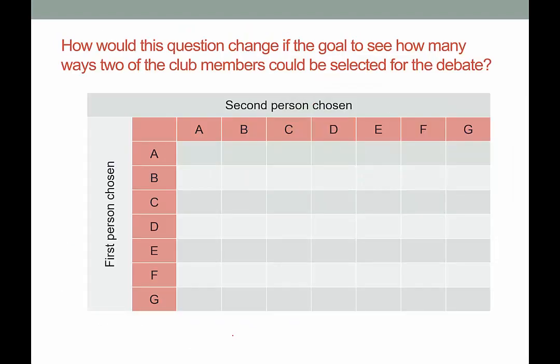How would this question change if the goal was to see how many ways two club members could be selected for the debate where there are no roles — you're either selected or you're not? In this case, one person still can't be both people, so we're not going to include Anna twice. But it means that A-B and B-A represent the same combination, so we only include any combination one time. One thing about all of these counting methods is that you're going to hear a lot about order matters versus order doesn't matter. When order doesn't matter, we don't take repetitions — we only list each unique individual combination. So when we fill this table in, it's going to be really interesting.